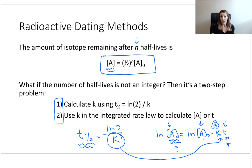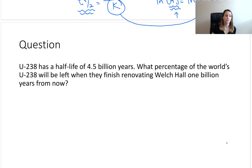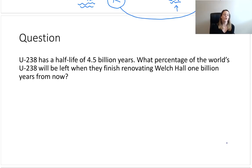That's basically all I have for you. So what I want you to do is practice this a couple different times. Here's your first question. U-238, or Uranium-238, has a half-life of 4.5 billion years. What percentage of the world's uranium will be left when they finish renovating Welch Hall one billion years from now? Try it.